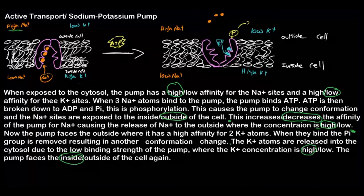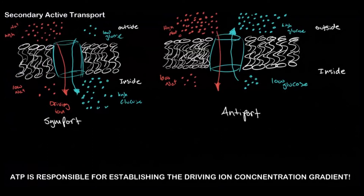The goal of the sodium-potassium pump is to pump against the concentration gradient, and this works through the conformational changes of the transport protein. Now let's talk about secondary active transport. Is ATP being used directly or indirectly in secondary active transport? Indirectly.